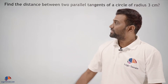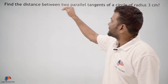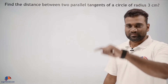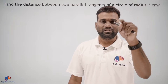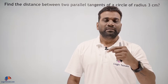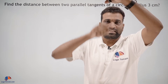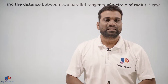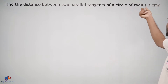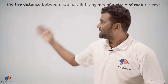Find the distance between two parallel tangents of a circle of radius three centimeters. There is a circle whose radius is three centimeters, and we need to find the distance between two parallel tangents to that circle. Obviously, the distance between them must be equal to its diameter. Therefore, the distance between two parallel tangents of a circle of radius three centimeters must be six centimeters.